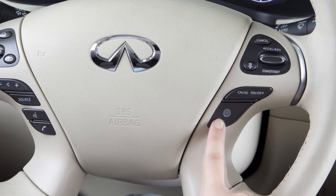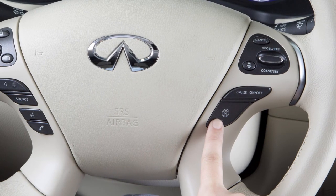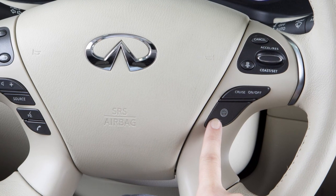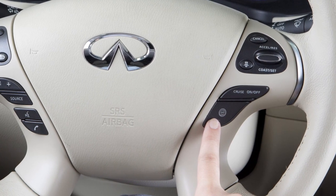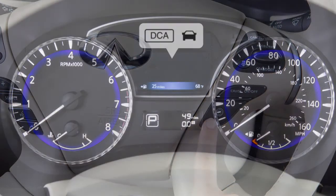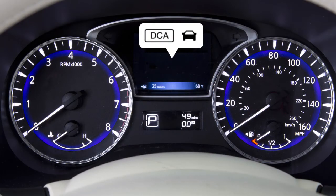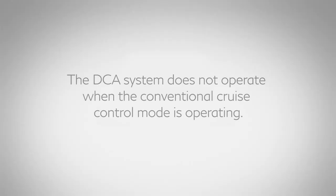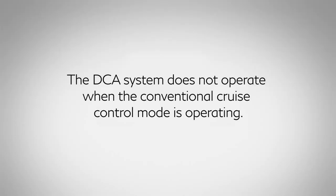Push the Dynamic Driver Assistance switch again to turn the DCA system off. The DCA system indicator will turn off. Please be aware that the DCA system does not operate when the conventional cruise control mode is operating.